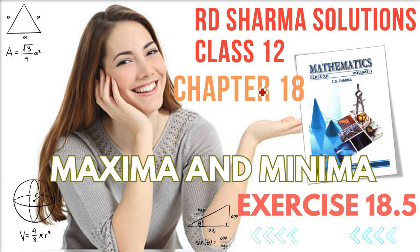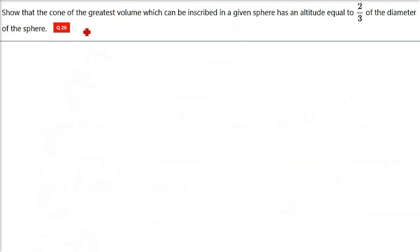This is RD Sharma solution class 12. We are taking chapter 18, maxima and minima, exercise 18.5. Show that the cone of the greatest volume which can be inscribed in a given sphere has an altitude equal to two-thirds of the diameter of the sphere.